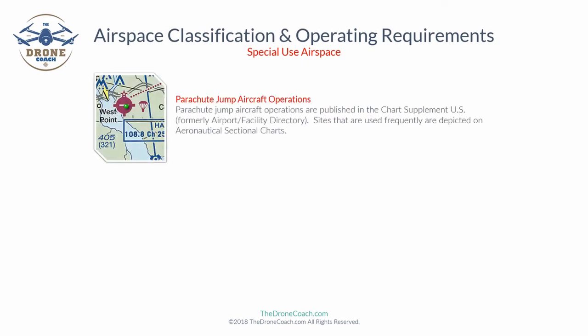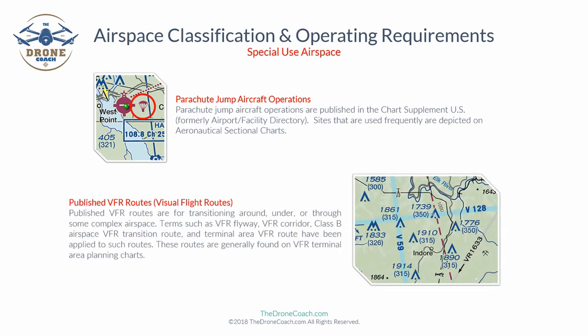Isogonic lines are depicted as dashed straight magenta lines labeled with degrees, such as 'nine degrees west.' An isogonic line indicates the magnetic variation — the difference between true north and magnetic north. Parachute jump aircraft operations are published in the Chart Supplement U.S. and depicted on sectional charts where used frequently. Published VFR routes — including VFR flyways, VFR corridors, Class B VFR transition routes, and terminal area VFR routes — are used for transitioning around, under, or through complex airspace and are generally found on VFR terminal area planning charts.